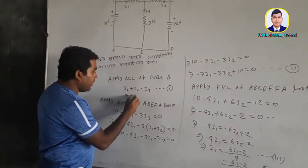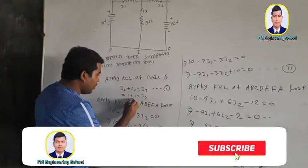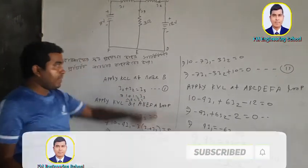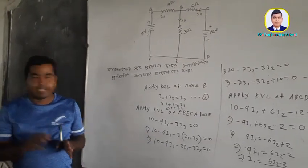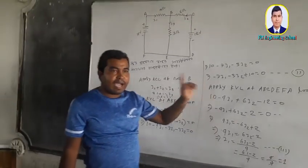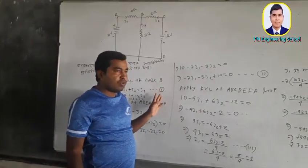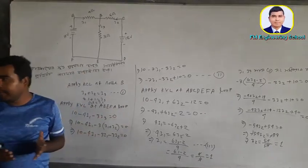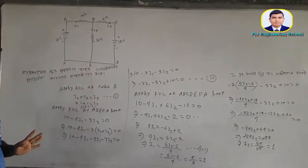I1 equals 1, I2 equals 1. So I1 plus I2 gives I3 equals 2. I3 is equal to 2. We have 2 circuits. I1 is equal to 2. If you want to do the circuits, we will do that. Thank you.